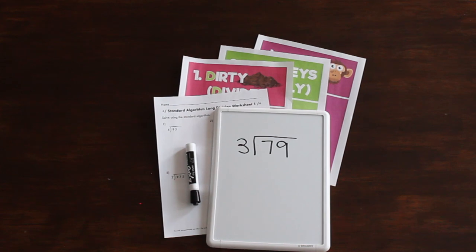For the standard algorithm, we use the Dirty Monkey Smell Bad acronym, which a lot of teachers use. There's some posters that you can put in your room. You can also design your own, but it just helps them to keep track of the steps. Divide, multiply, subtract, bring down. For the standard algorithm, in this example, first we divide 7 by 3. The answer is 2. So we would write 2 at the top.